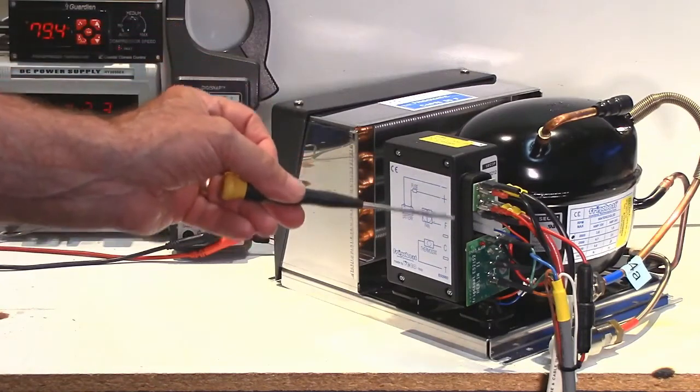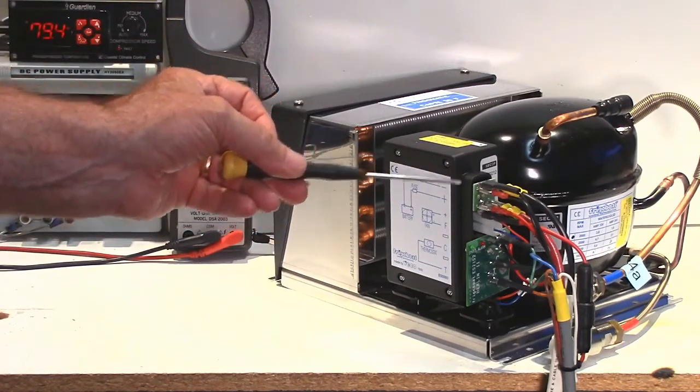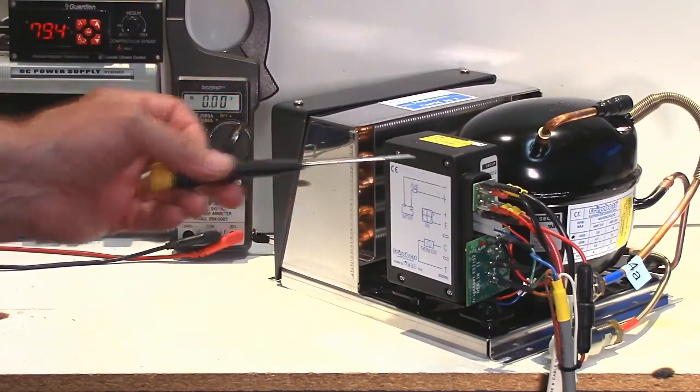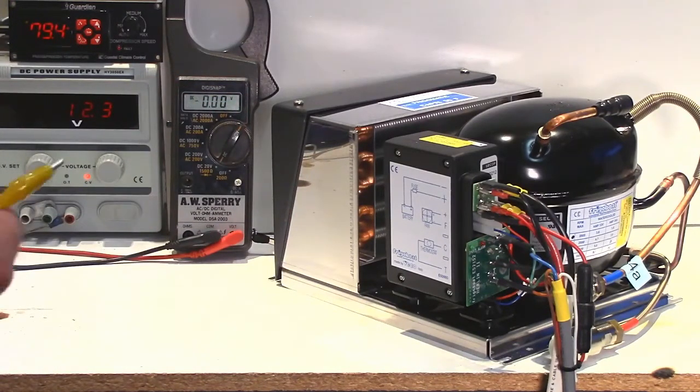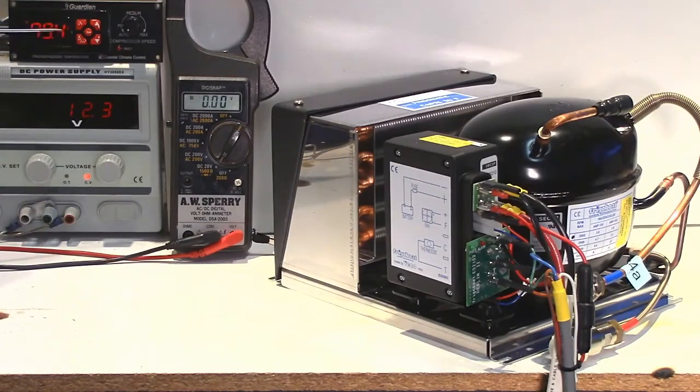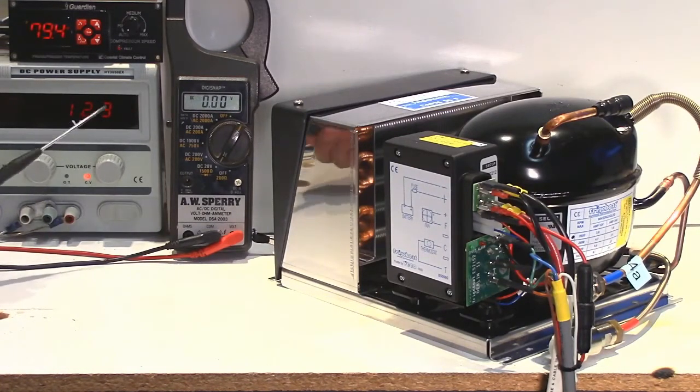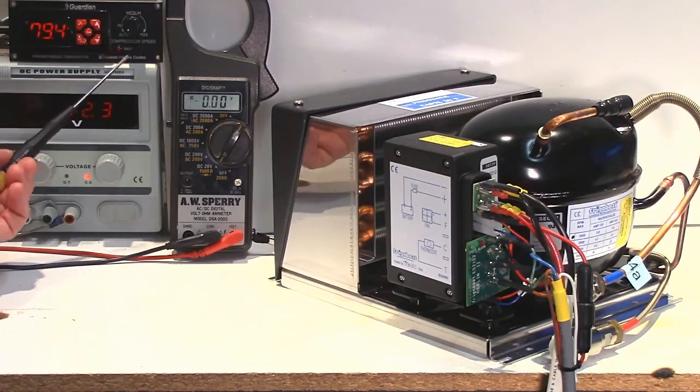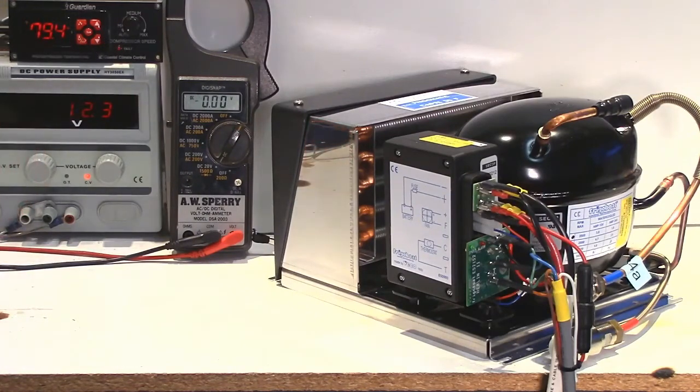On the top we have an extra circuit board just to replicate and give us extra terminals on the positive and negative so we can gain more terminals. And here we have the Guardian 2 if you can see that. And that also has a fault LED on it as well as a manual compressor speed control.